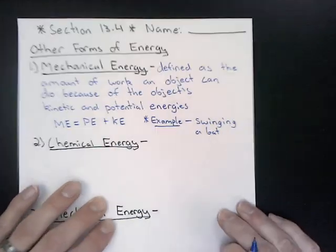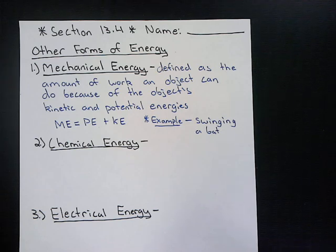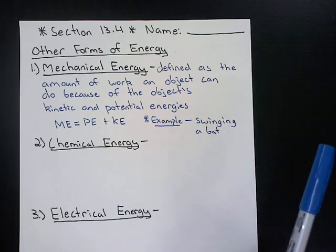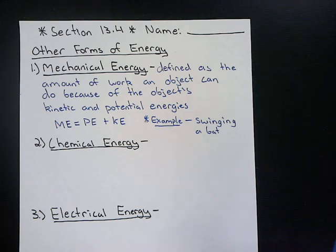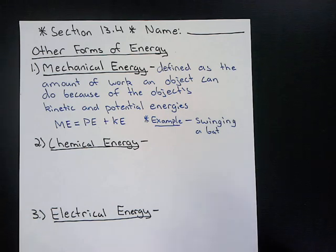As somebody swings the bat and begins to move it, the bat has kinetic energy. And because of the way people swing a bat, there is also still potential energy as they swing through. So mechanical energy combines both kinetic and potential energy together.